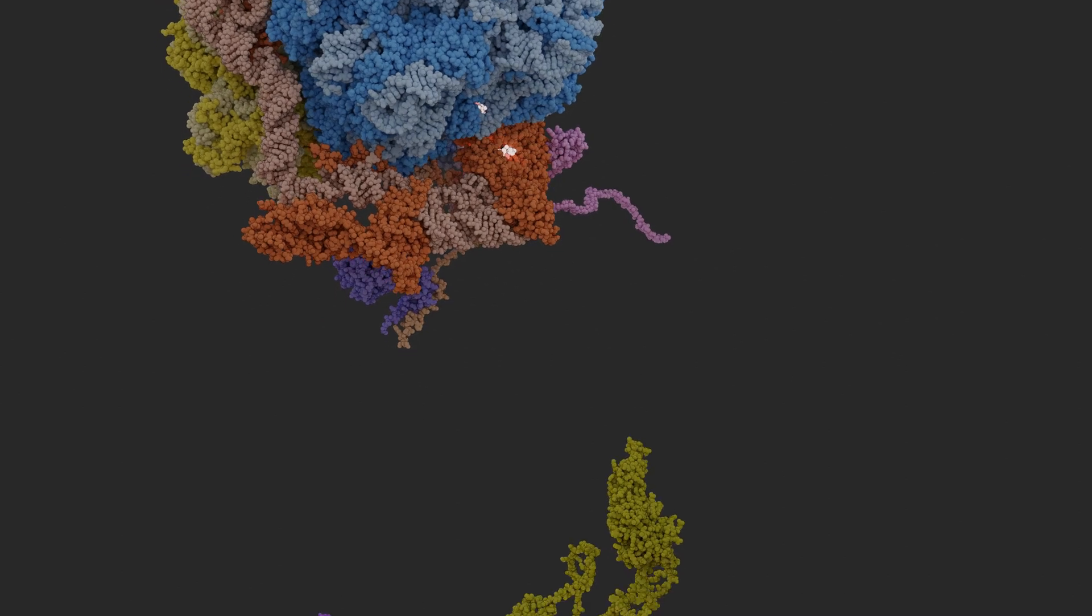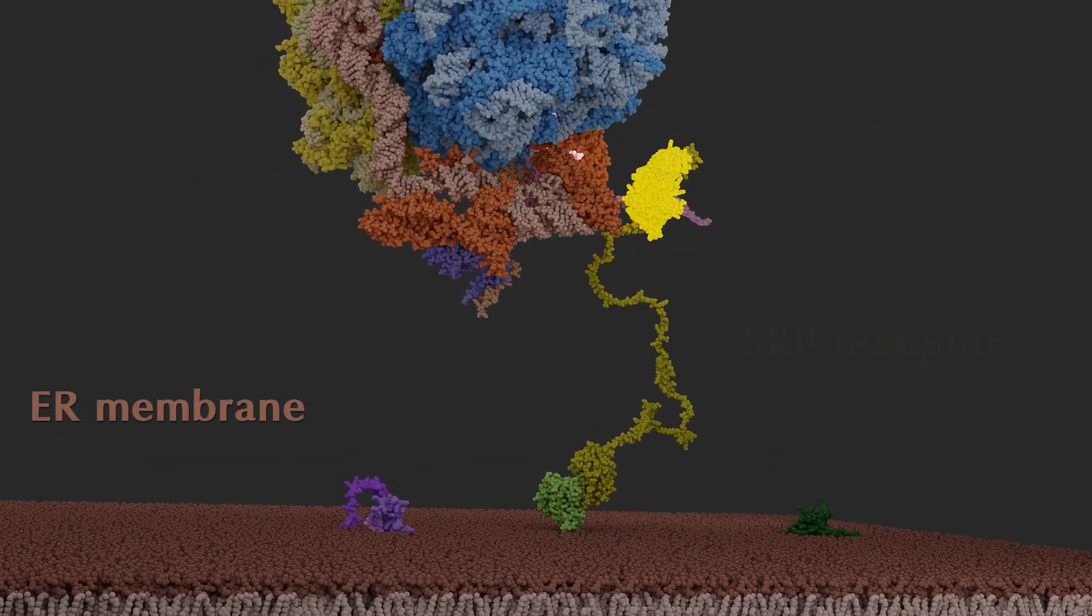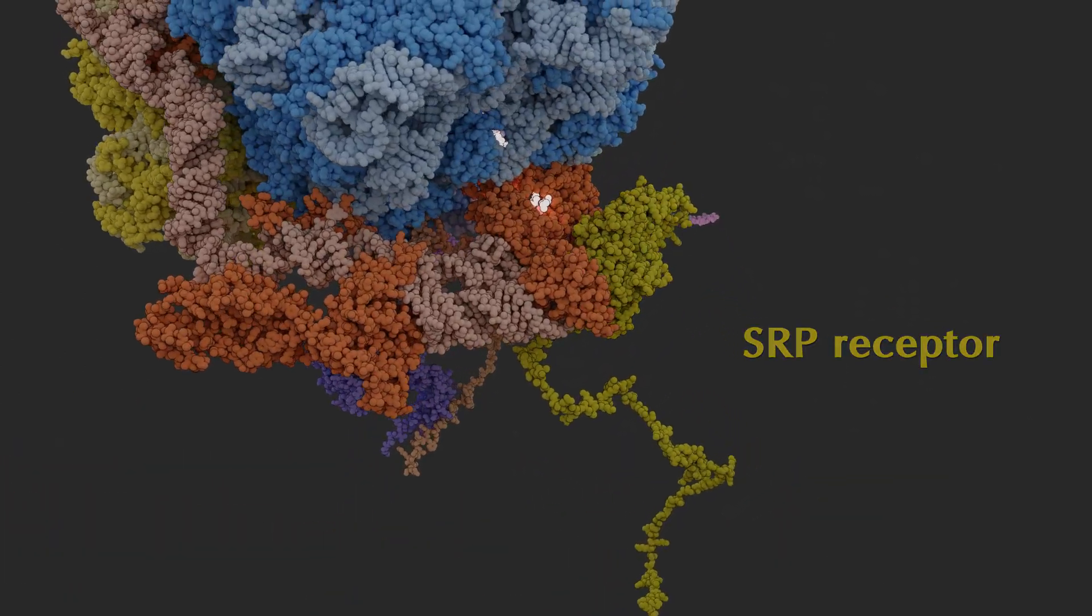When the ribosome approaches the ER membrane, it is caught by a flexibly tethered domain of SRP receptor.